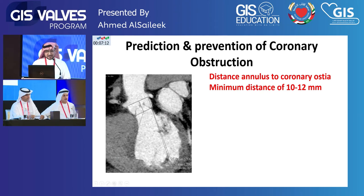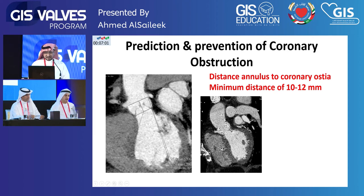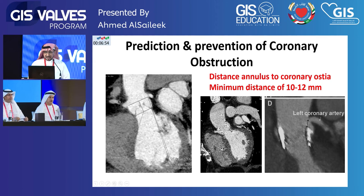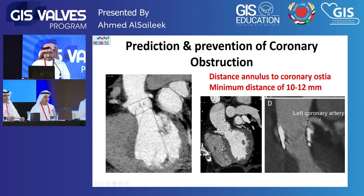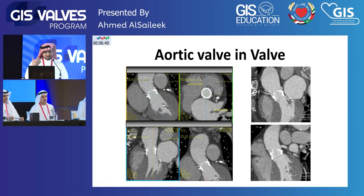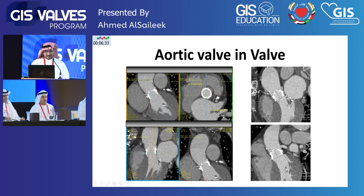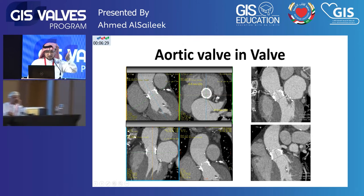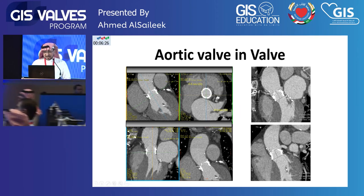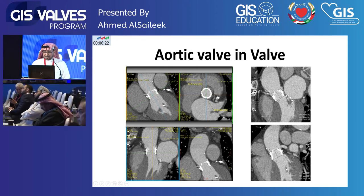One of the most important measurements is the distance between the aortic annulus and the coronaries, because the valve needs sufficient space to prevent coronary obstruction. For the self-expandable valve, this may be less critical, but for the balloon-expandable valve, we need a distance of at least 10 mm to prevent coronary obstruction. We measure from the lower aspect of the valve to the level of the coronaries.